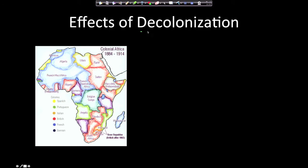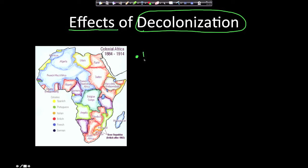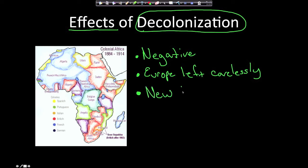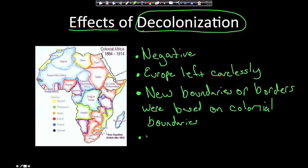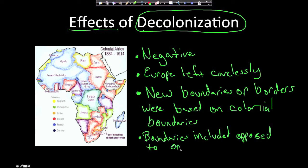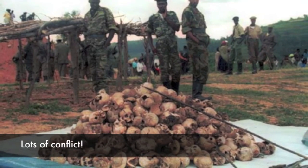Let's talk about the effects of decolonization — when the colonizing imperialistic powers of Europe left, which happened after World War II. The impact was largely negative. Europe left carelessly; the new boundaries were based on old colonial boundaries. The problem was these boundaries often included two or more ethnic groups that were opposed to each other, and of course this led to a lot of conflict.